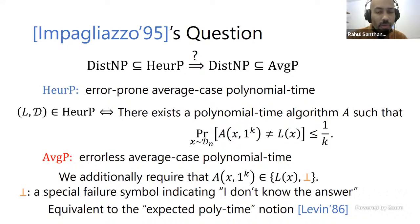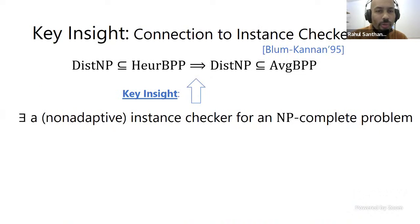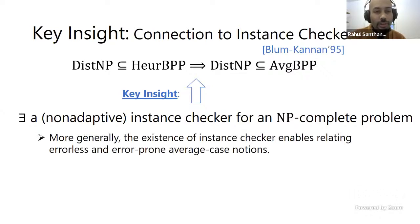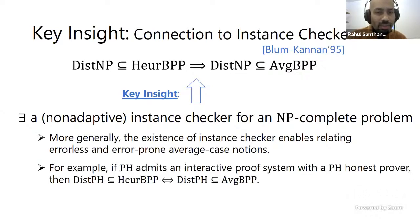The errorless notion is equivalent to Levin's notion of expected polynomial time. What we show is a connection with the well-known notion of instance checkers. An instance checker is an oracle procedure for a language where, given the language as oracle, you always give the right answer; and given some other oracle, you give either the right answer or 'don't know' with high probability. This notion has been well-studied since the early nineties when it was defined by Blum and Kannan.